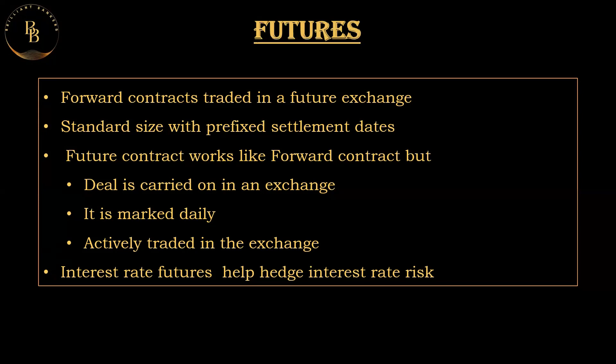The farmer sells a soybean futures contract on the commodity exchange, agreeing to deliver a specified quantity of soybeans at a predetermined price when the contract expires. The outcome: if at delivery the market price is higher than the agreed futures price, the farmer is still obliged to sell at the lower price. However, if the market price is lower, the farmer benefits because they locked in a higher price through the futures contract.